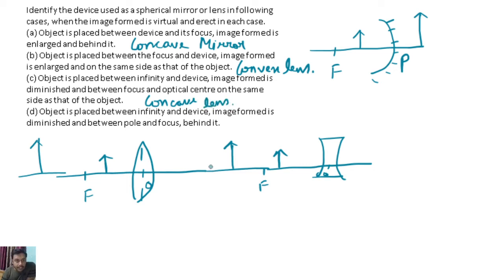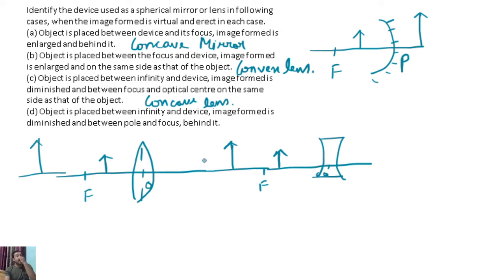The object is placed between infinity and the device, and the image formed is diminished and between the pole and focus, behind it. This is the last case — convex mirror.